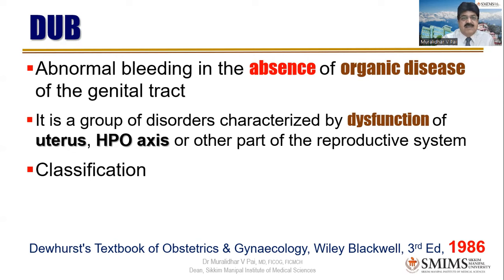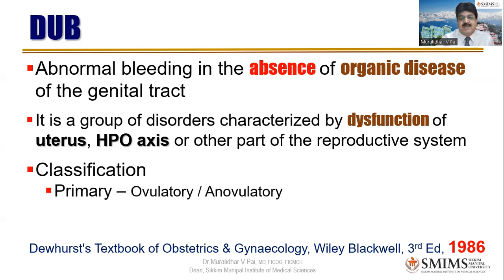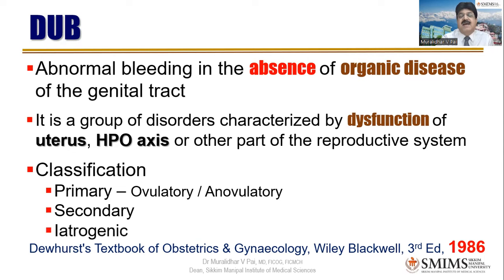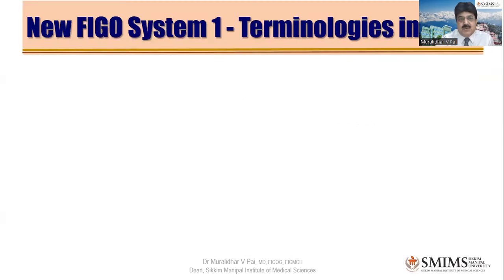In Dewhurst, secondary DUB was due to pathology outside the genital tract — like hyperthyroidism or other endocrine problems — not organic pathology within the genital tract. Iatrogenic causes were also incorporated, and these are now categorized differently within the FIGO system. This classification was somewhat defeating its own definition, and after the third edition of 1986, the DUB chapter was deleted in subsequent editions and is absent from the current ninth edition.